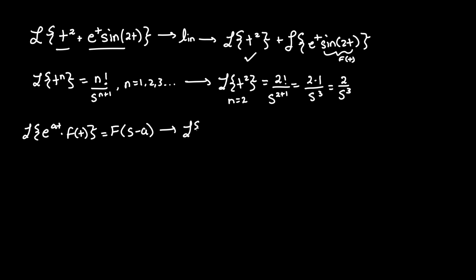So in our case, when we have Laplace of e to the t times f of t, where f of t is still sine of 2t, we know that a equals 1. This means that our Laplace of f of t becomes F of s minus 1. Now let's find F of s.